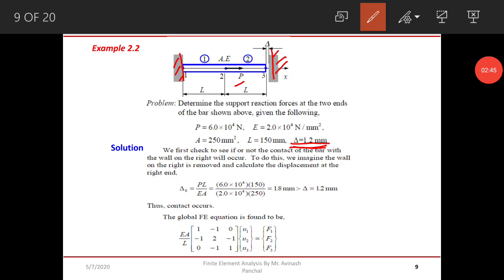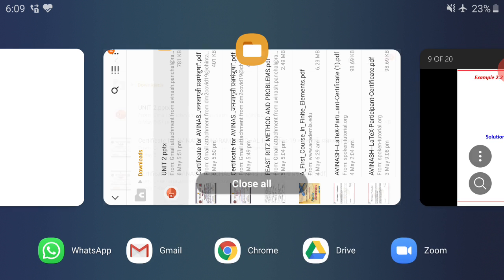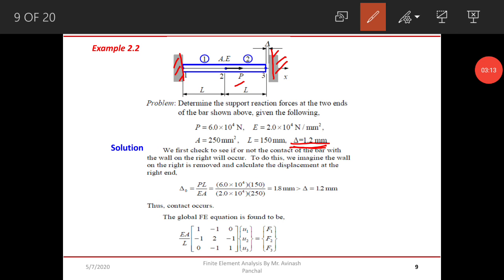Then we have to consider this as delta 3 or u3, the displacement at node number 3. If the allowable displacement is less than 1.2 mm then we will see that there may not be any effect of these restrictions. We will see the further solution of this problem.